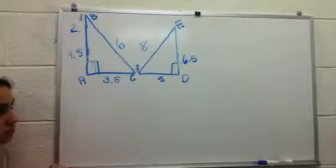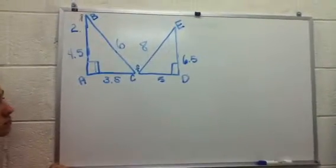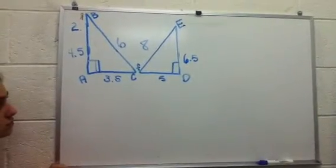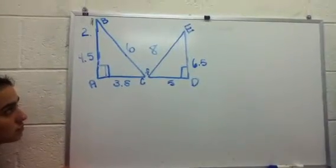On Batman, two triangles are formed. Are triangle ABC and triangle DEF similar?